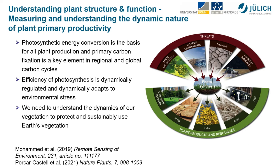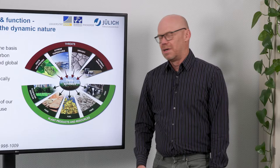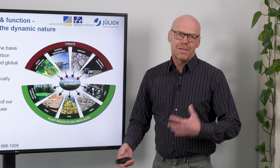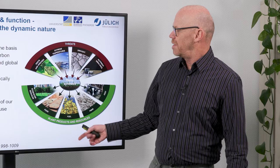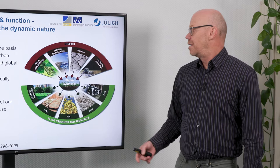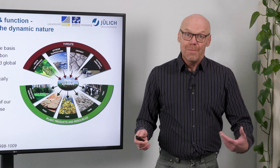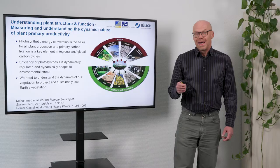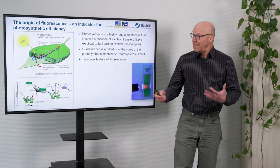We know that photosynthesis, being the central pathway, is mainly affected by a lot of external threats — by diseases, by droughts, by environmental stresses. Any limitation in photosynthesis may have impacts on the production of plant material. If photosynthesis is downregulated, then plant growth is limited and therefore plant products are affected. I'm mainly interested in measuring this photosynthetic pathway non-invasively in detail.